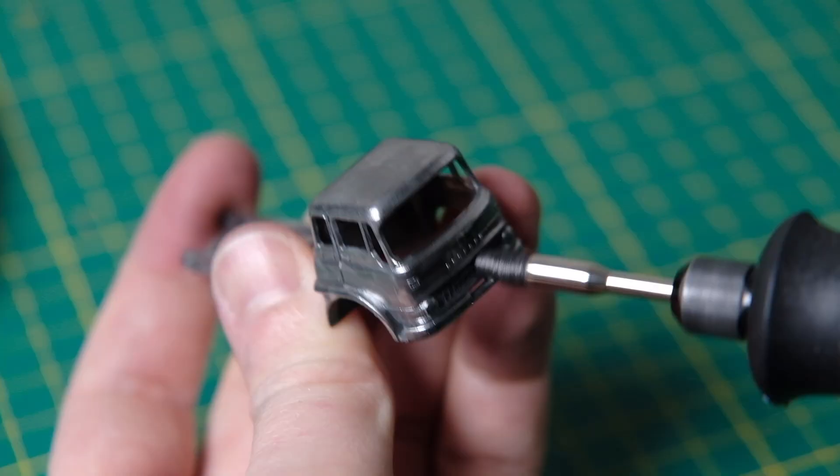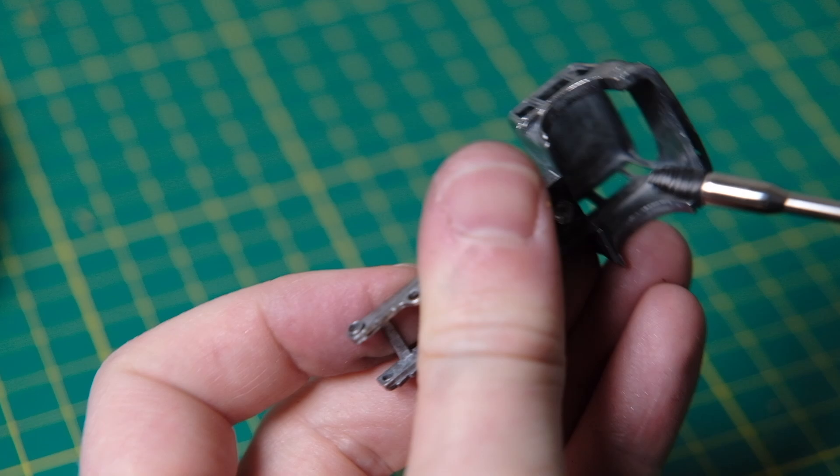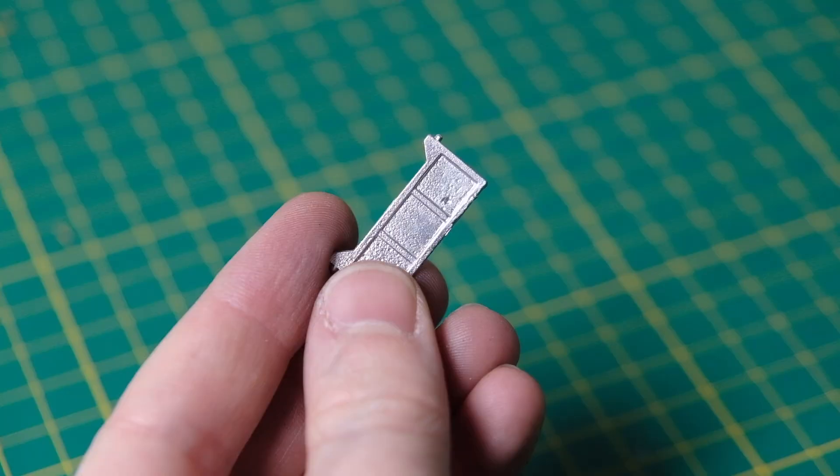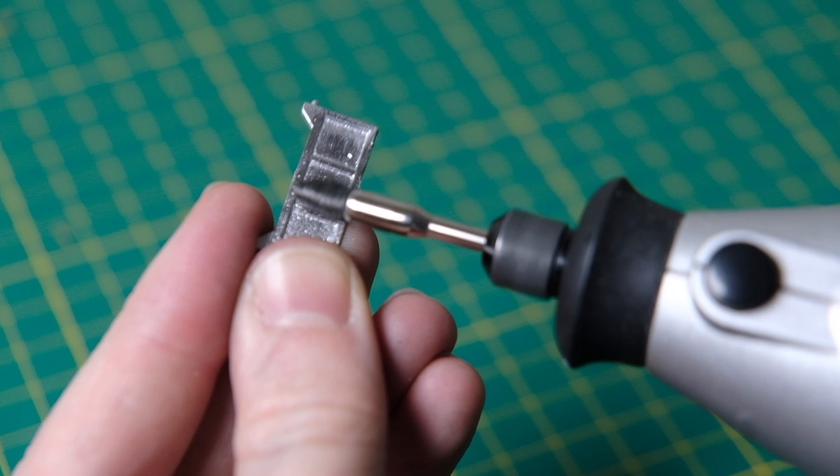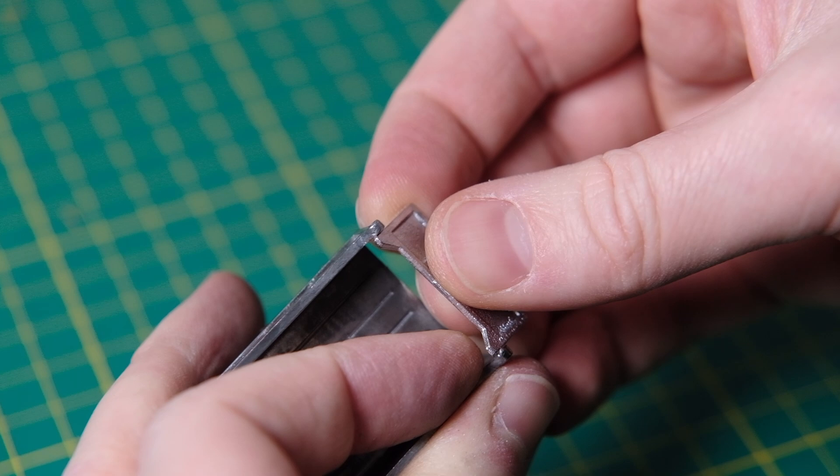There was one other example of the Bedford TK in the Matchbox 1-75 range. The 25C petrol tanker that launched in 1964 was also a TK but came fitted with a tilting cab, a feature that was not available on the real TK.